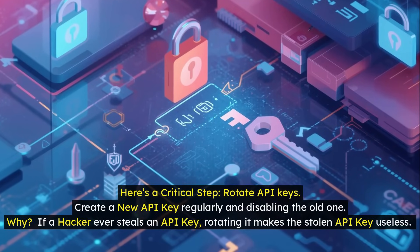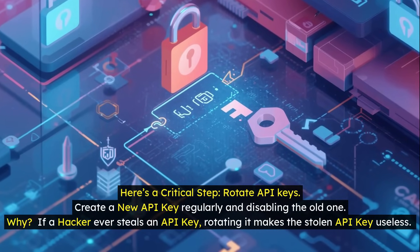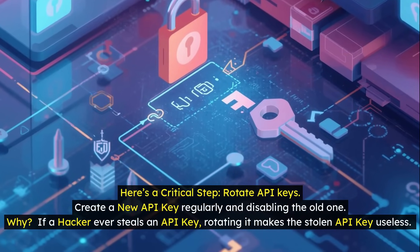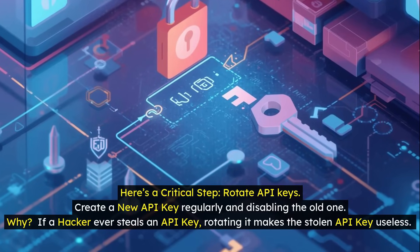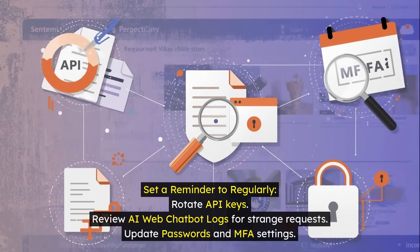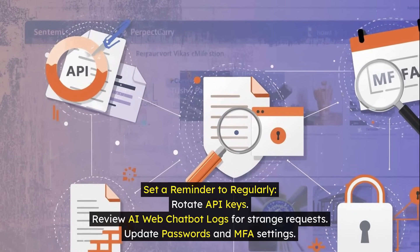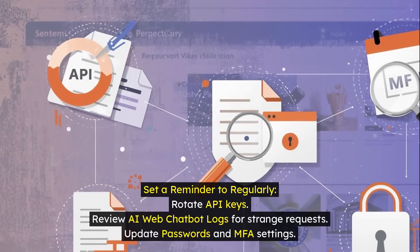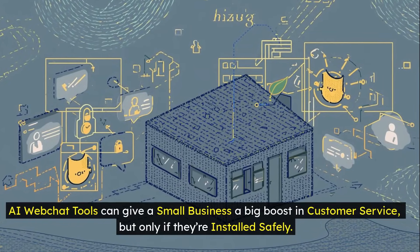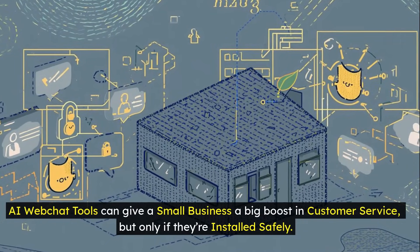Rotate API keys: create a new API key regularly and disable the old one. If a hacker ever steals an API key, rotating it makes the stolen key useless. Set a reminder to regularly rotate API keys, review AI web chat bot logs for strange requests, and update passwords and MFA settings. AI web chat tools can give a small business a big boost in customer service, but only if they're installed safely.